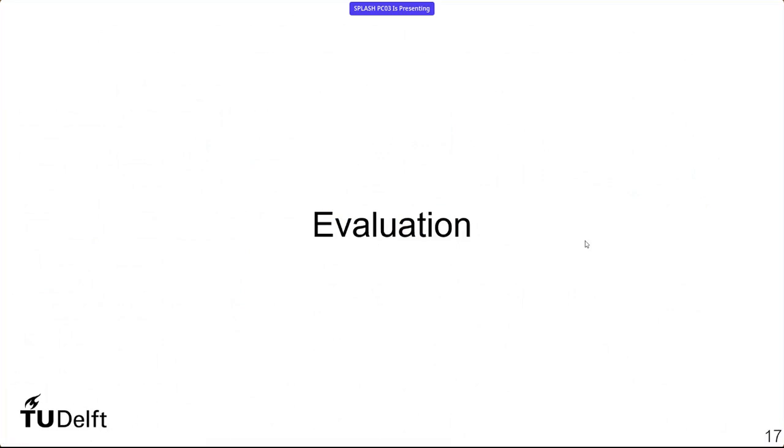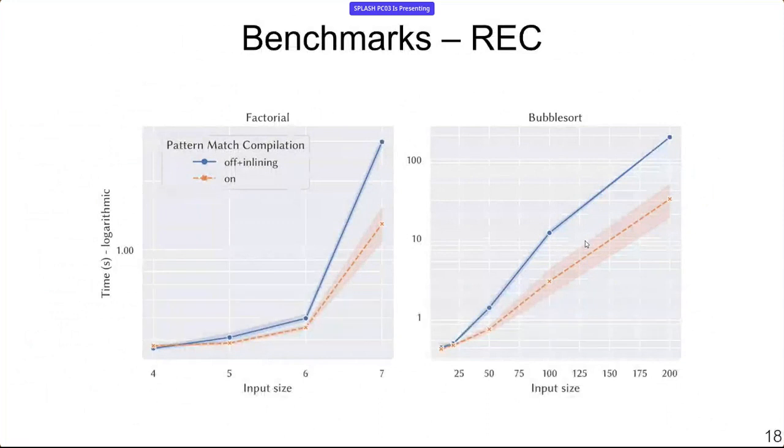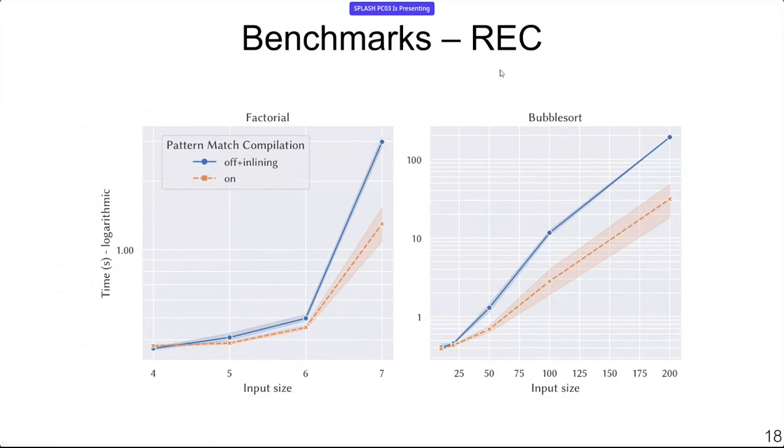So we wrote an implementation of this, a little prototype to add to the Stratego compiler, just to do a sanity check to make sure that this is actually something that we should be optimizing in Stratego, and what we are able to show is that that is indeed the case. REC is the rewrite engine competition which Stratego was part of for a couple of years. So we have a corpus of benchmark programs that we can run. In this case we see factorial and bubble sort for different input sizes. The time here is logarithmic. The blue line is the normal Stratego compiler, the execution after a normal Stratego compilation, and the orange line below that is the optimized version.